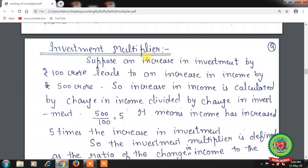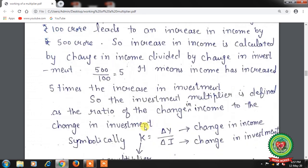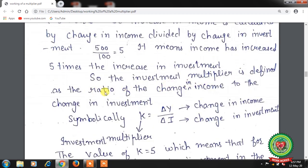Next is the investment multiplier. Suppose an increase in investment of Rs. 100 crore leads to an increase in income of Rs. 500 crore. The increase in income is calculated as the change in income divided by the change in investment. So the ratio of change in income over change in investment gives a value of 5 — meaning income increased 5 times relative to the increase in investment. The investment multiplier is defined as the ratio of the change in income to the change in investment.